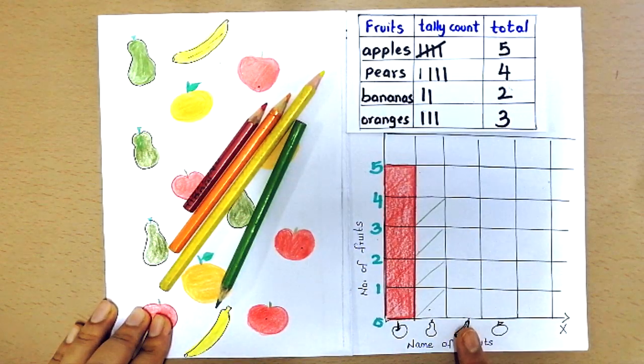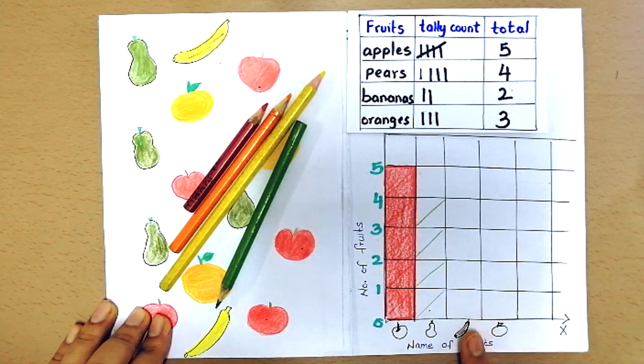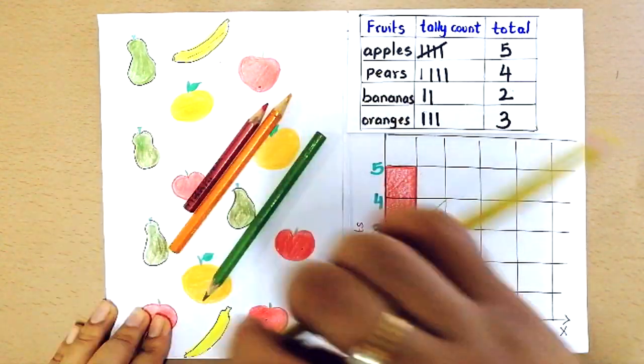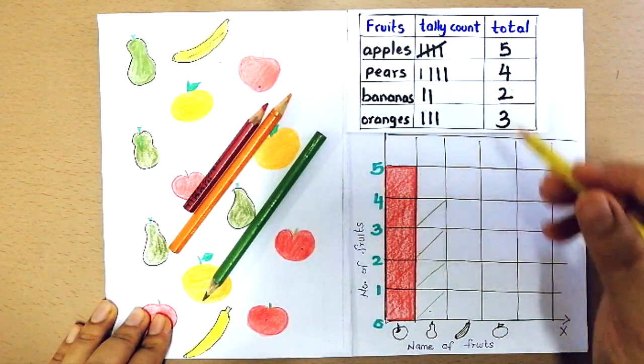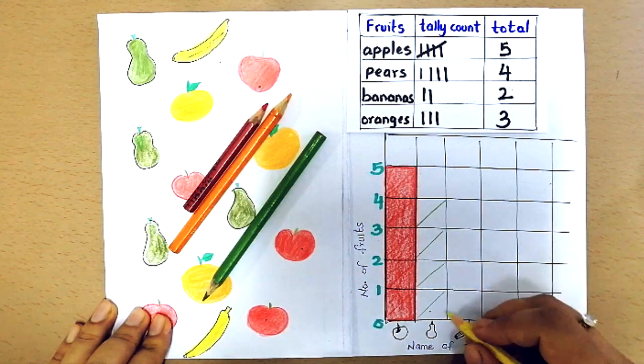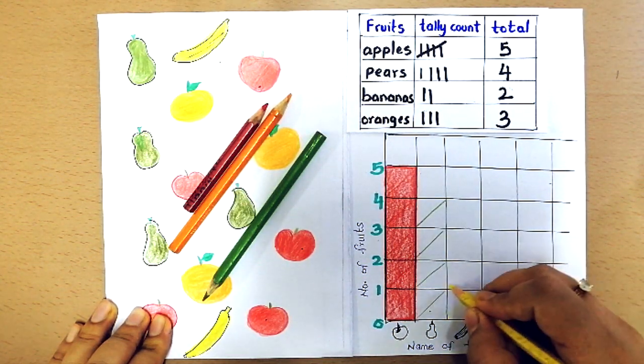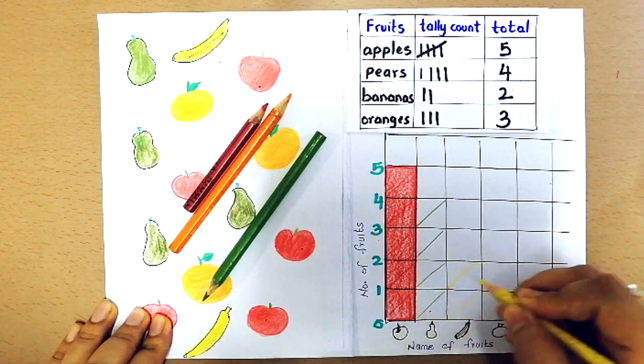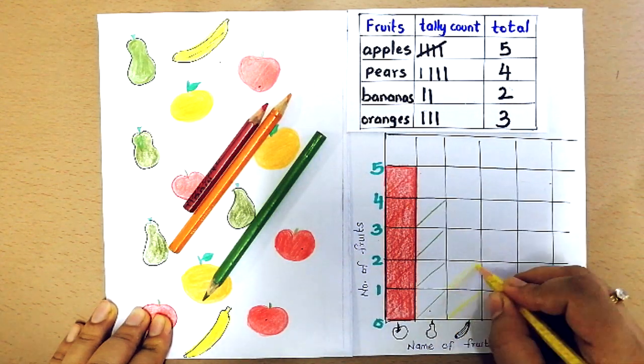The next fruit I have here is banana. So let's see how many are there. There are 2 bananas. So let's color 1, 2, 2 bananas with yellow.